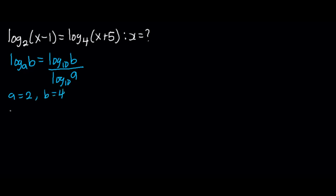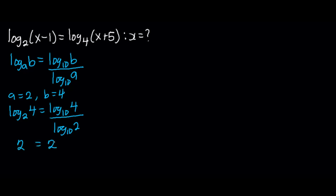Let us verify this law by assuming a to be 2 and b to be 4. So this gives us log to the base of 2 of 4, and according to the property it is the same as log to the base of 10 of 4 over log to the base of 10 of 2. Now log to the base of 2 of 4 is 2, and this also gives us 2. You can pause the video and verify.